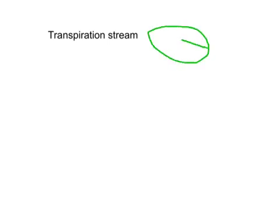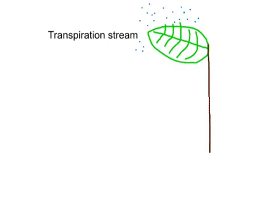The transpiration stream describes how, as water evaporates from the leaves, more water is drawn up from other parts of the plant. Water vapour diffuses from inside the leaf through the stomata to the outside. Once it does, the water vapour potential inside the leaf decreases, which increases osmosis from the xylem to the mesophyll cells. As water is drawn from the xylem, it pulls more water through the plant from the roots.